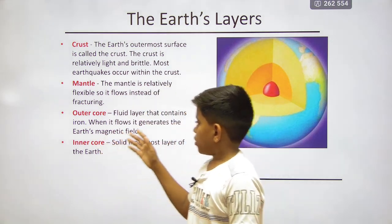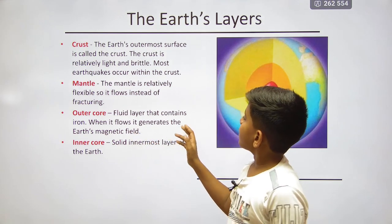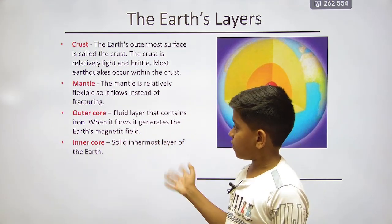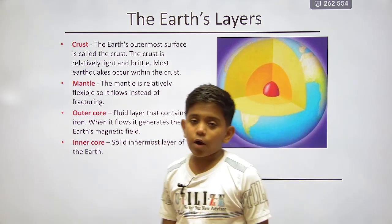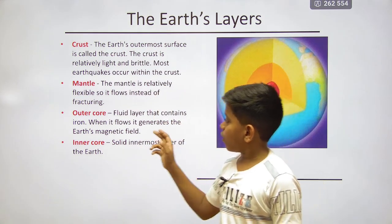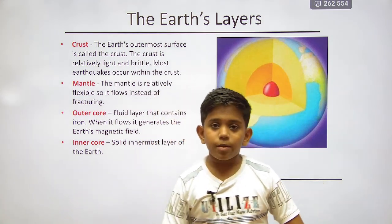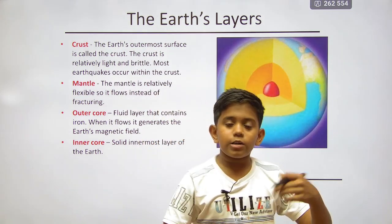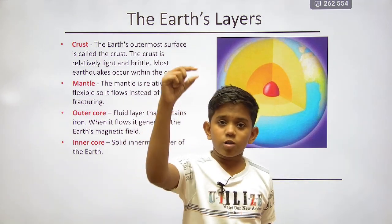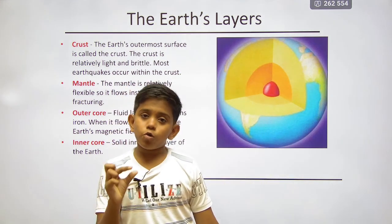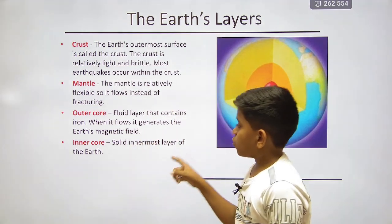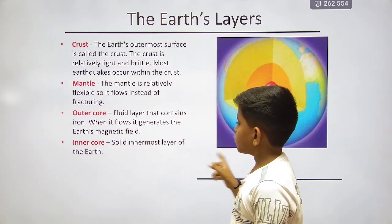The outer core is a fluid layer that contains iron. When it flows, it generates the earth's magnetic field. The outer core contains a fluid layer of iron that creates the magnetic field of the earth, which has the north pole on the north side and the south pole on the south side.